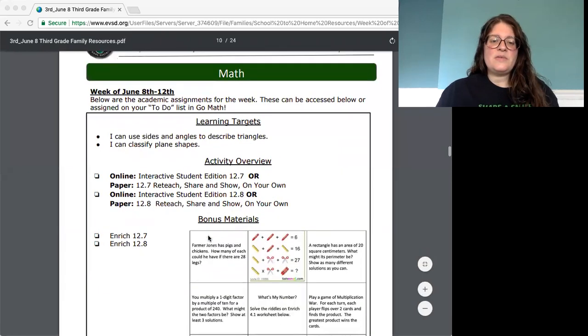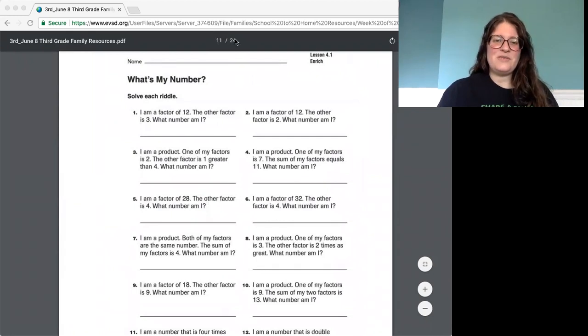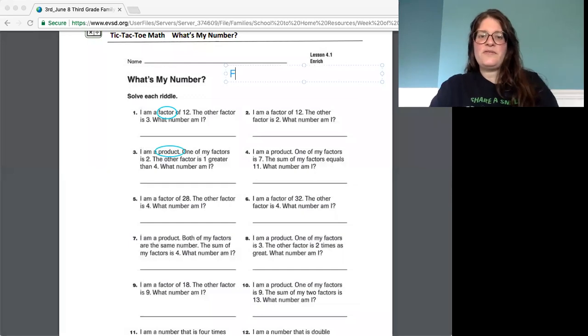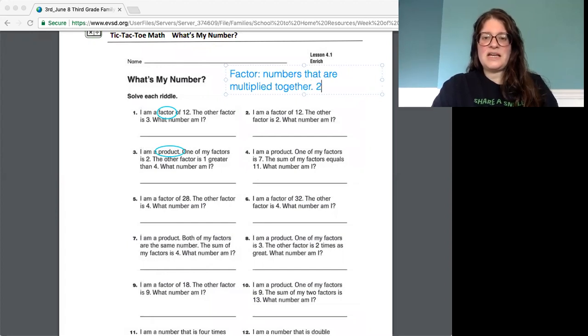And there's another question there but I'm going to move on, so I don't make the video too long. Okay next we're going to work on a little bit of vocabulary for math. So there's some what's my number questions here and I just wanted to highlight some of the words here so that you can figure out what these words mean and it'll help you guess the number. So factor. The factors are numbers that are multiplied together. So the example would be like 2 times 5 equals 10. So 2 and 5 are factors of 10.